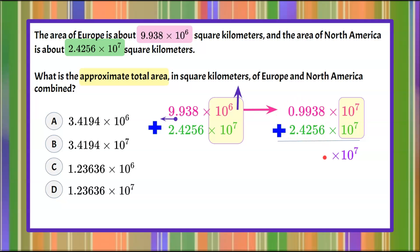8 plus 6 is 14, bring down the 4, carry the 1. 1 plus 3 is 4, plus 5 is 9. 9 plus 2 is 11, bring down the 1 and carry the 1. 1 plus 9 is 10, plus 4 is 14, so here's the 4, bring the 1 up.